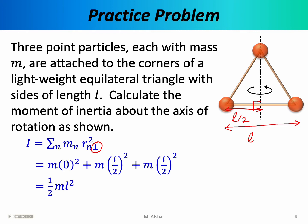We take L over 2 — don't forget to square it — and then turn to object three, which is exactly the same distance from the axis of rotation: L over 2. We square it, put everything together, and find that for this particular triangle rotating around this particular axis, the moment of inertia is one half mL². If m and L were given as numerical values, we could substitute those in.